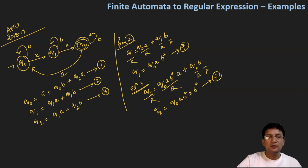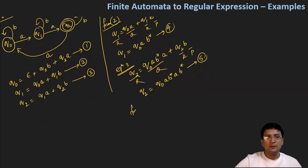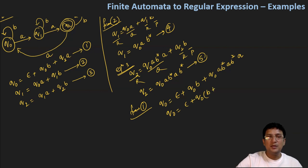Now our equation number first, we can put Q2's value in it. So we put Q2's value in equation number one. From one, I am picking Q0 equals epsilon plus Q0b or Q2's place, we are putting Q0ab star and again ab star. Then ahead we have a, so we wrote a. So can we write this as Q0 equals epsilon plus Q0 common, and then we have b plus ab star ab star a.